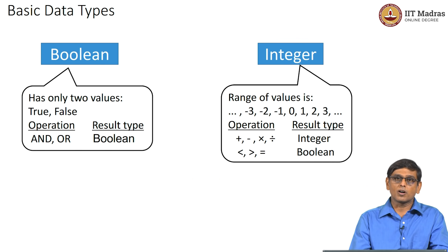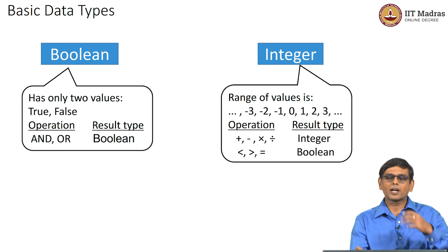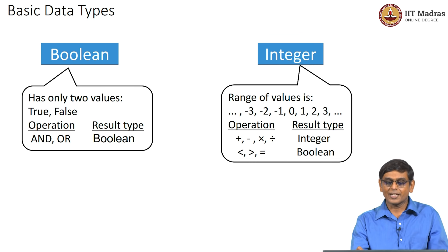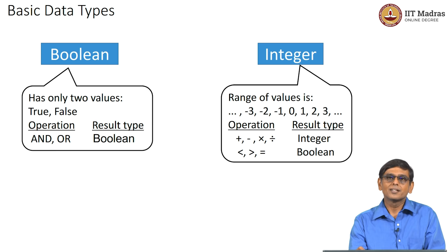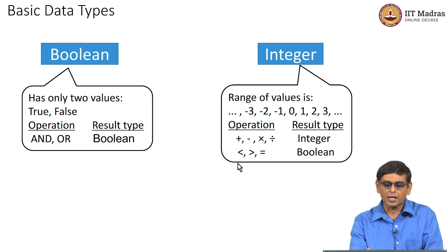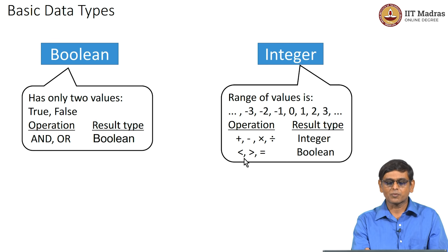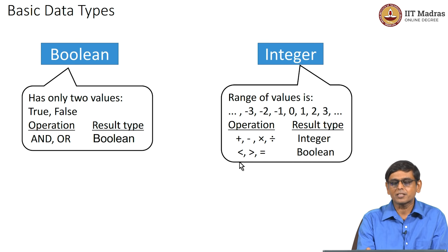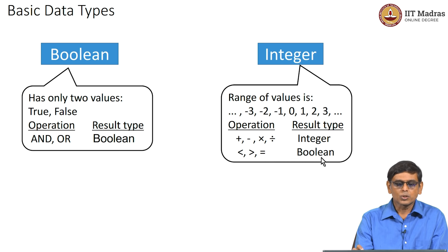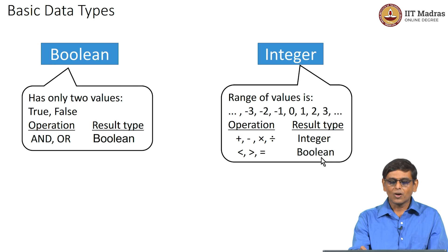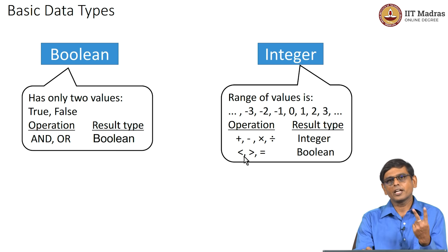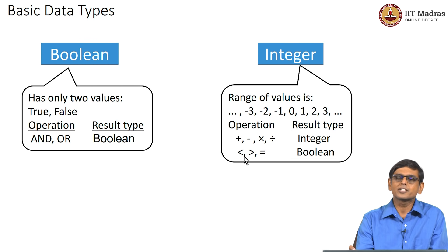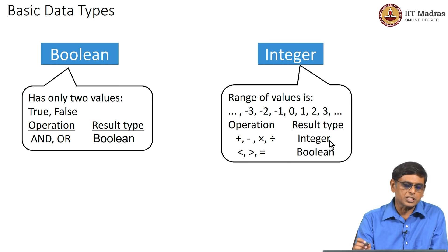Another operation we used for integers is comparison — checking whether one integer is less than, greater than, or equal to another. For example, we compared marks or dates. Comparison of any numbers generates a true or false value, so the result type of a comparison is Boolean. An operation can take one or two values; for comparison, addition, or multiplication we take two values and the result is Boolean for comparison and integer for arithmetic operations.